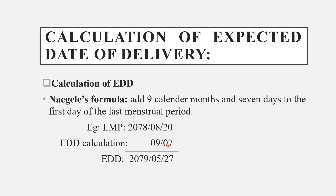When the month total exceeds 12, we carry over. If we get 17 months, we subtract 12 months, which gives us 5, and add 1 year. So 2078 plus 1 year becomes 2079, and the month becomes 5. This is how we do EDT calculation.